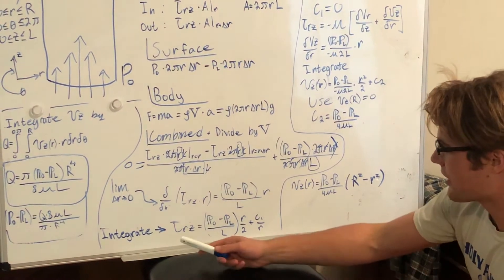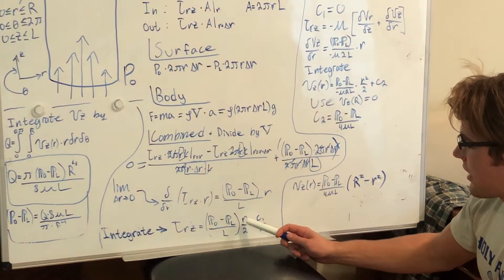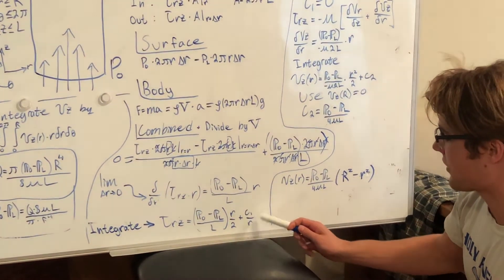By integrating, we now find that our stress is equal to our pressure differential term over L times r over 2 plus our constant that we find from integrating over r.